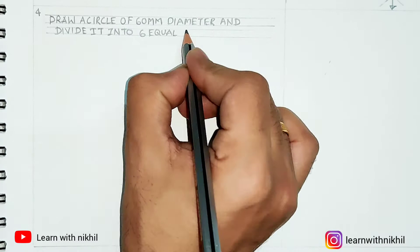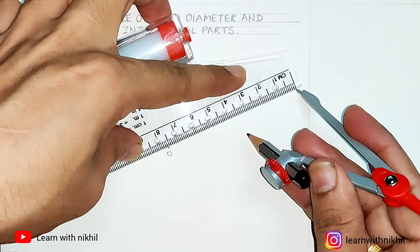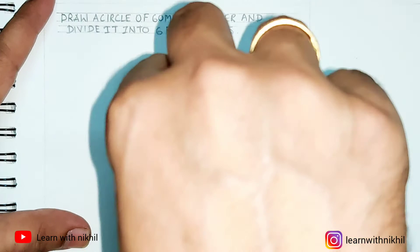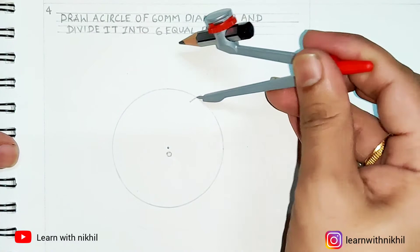Fourth one is: draw a circle of 60mm diameter and divide it into six equal parts. You need to have any diameter of circle and you will be asked to divide it into six equal parts. So I am drawing a circle of 60mm diameter.